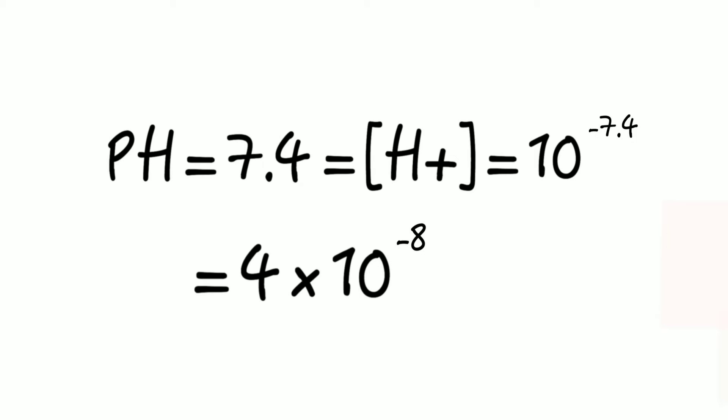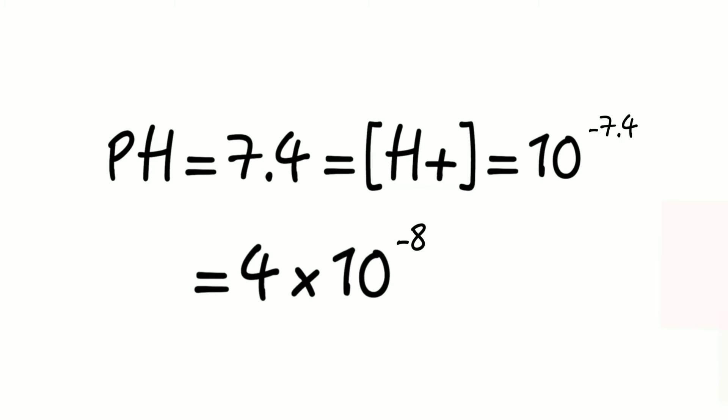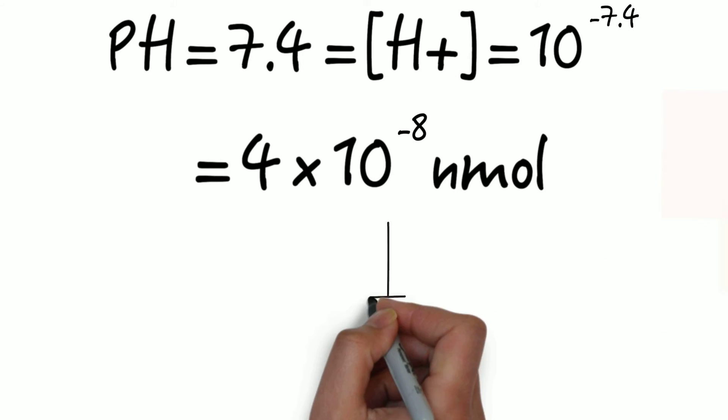So 10 to the minus 7.4 would equal 4 times 10 to the minus 8. Now, you don't have to do the calculation yourself, just trust me on this. As you're probably aware, that's nanomolar.